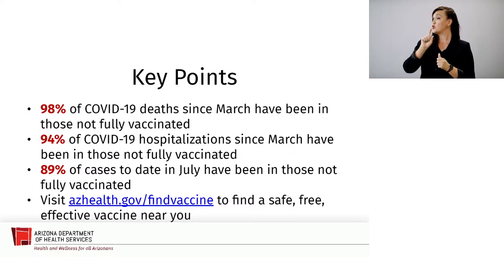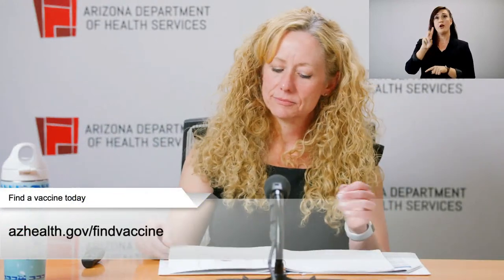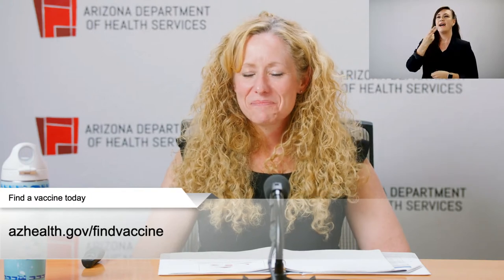Our first question is from Howard Fisher. In May about 95% of folks who got COVID were unvaccinated, 92% in June, and like 90% this month. What's going on there — are there just more breakthrough cases, or is the vaccine less effective against COVID?